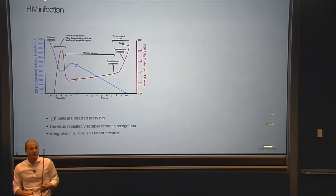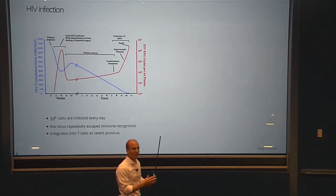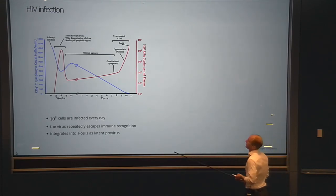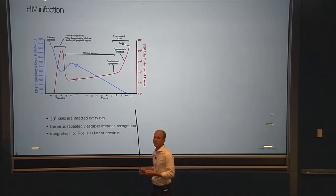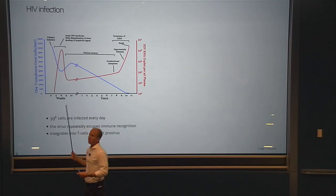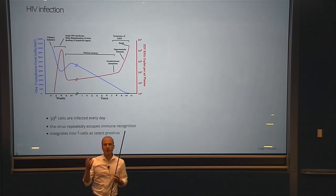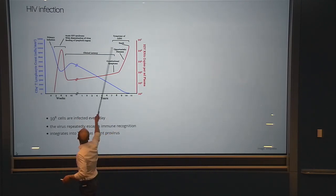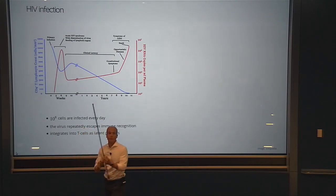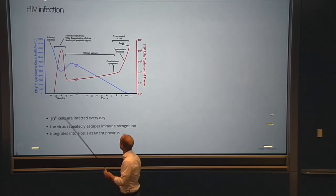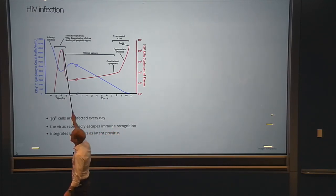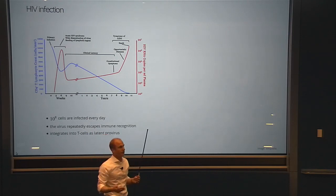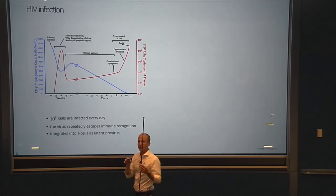All of this evolution happens within the individual, because the virus needs a cell to replicate — outside an infected person it doesn't do anything. The red line in this sketch depicts the amount of virus per millimeter of blood in an infected person, on a logarithmic scale. In the first few weeks you have a big spike, followed by a decline of several orders of magnitude, due to the adaptive immune system starting to fight the virus.